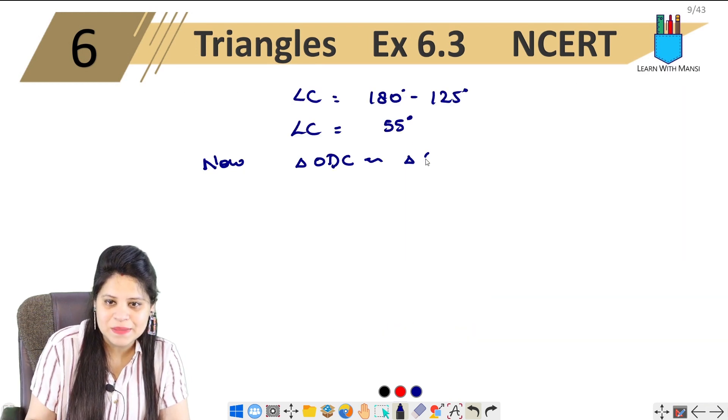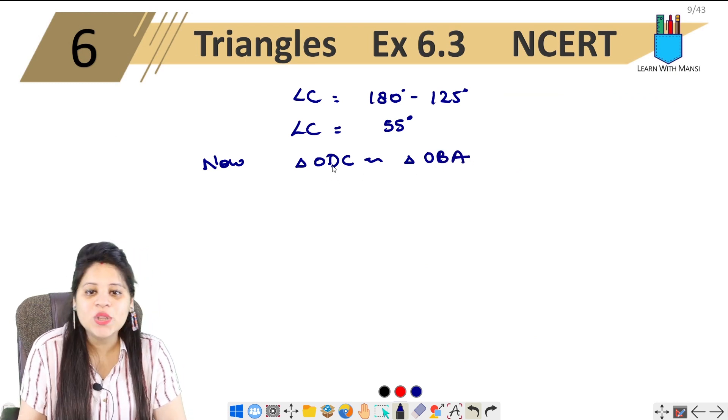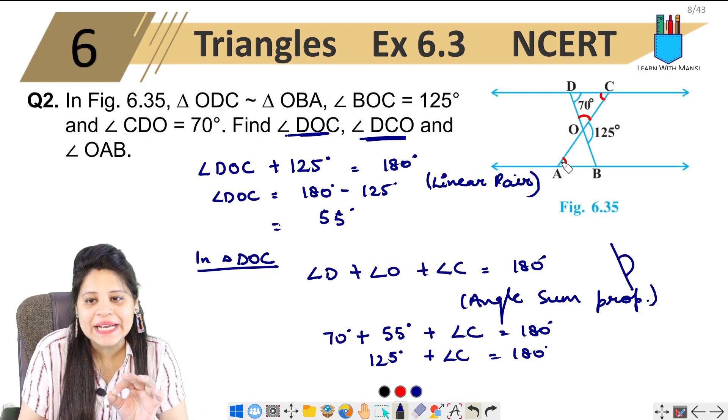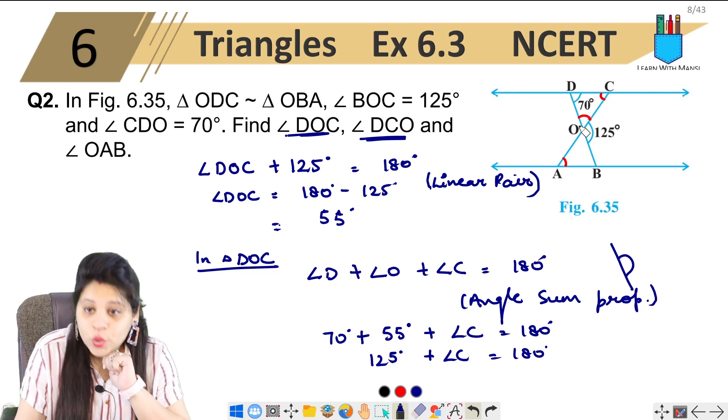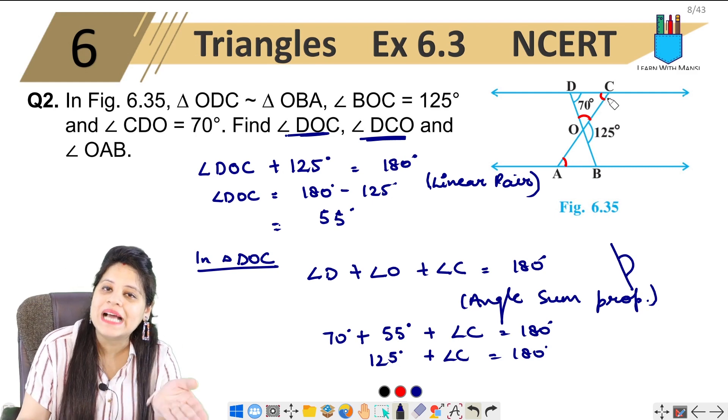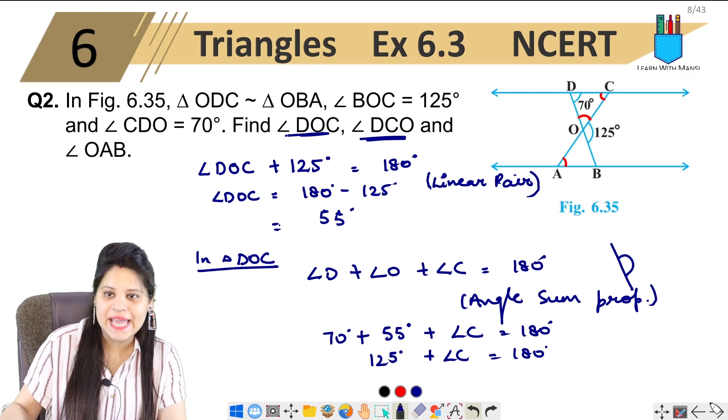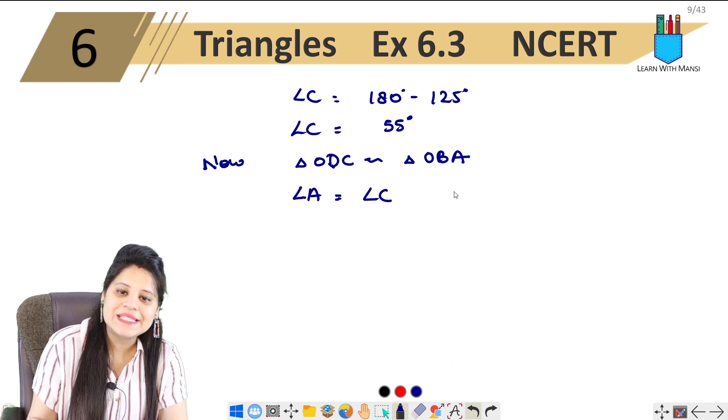Okay, these two triangles are similar. So now I can say angle A and angle C will be equal. Why? Because corresponding angles of similar triangles are always equal. So angle A equals angle C.